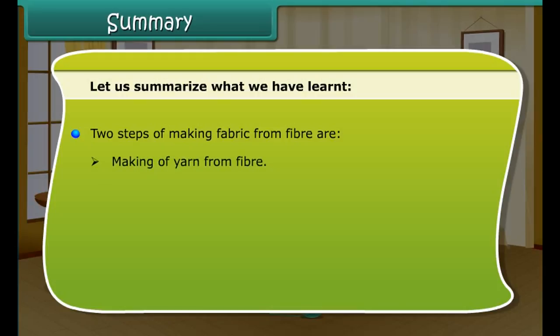Let us summarize what we have learned. Fabric is made up of yarns arranged together. Thin strands of yarn are made up of still thinner strands called fibers. Fibers are of two types: natural fibers and artificial fibers. Cotton and jute fibers are obtained from cotton and jute plants respectively. Two steps of making fabric from fiber are: first, making yarn from fiber, and second, making fabric from yarn.